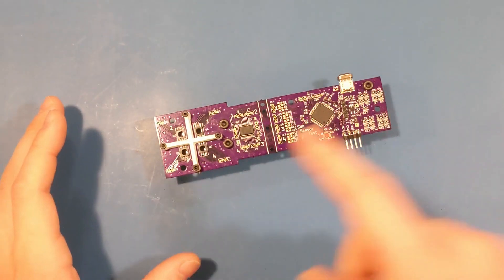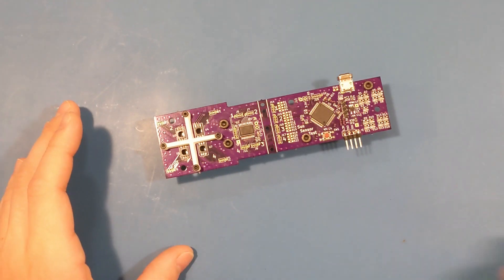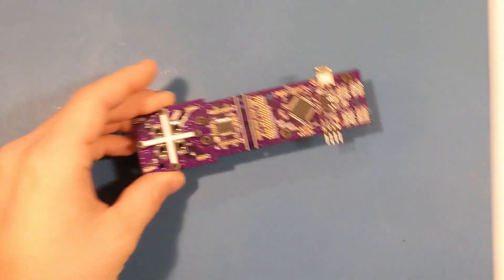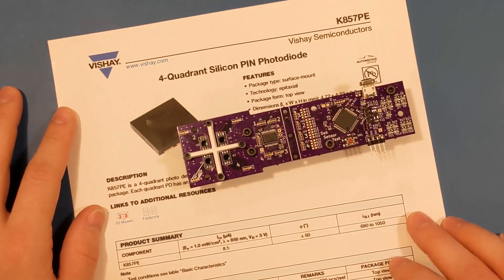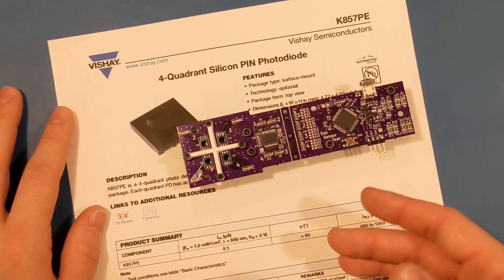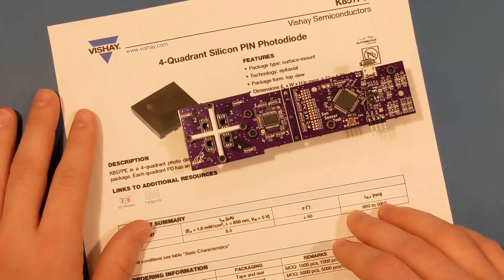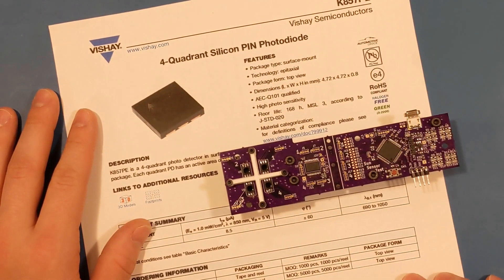All right, with all of that out of the way, let's talk about this sun sensor. The actual light-sensitive part is the K857PE. It is a four quadrant diode, which just means that it has four photodiodes inside of it.